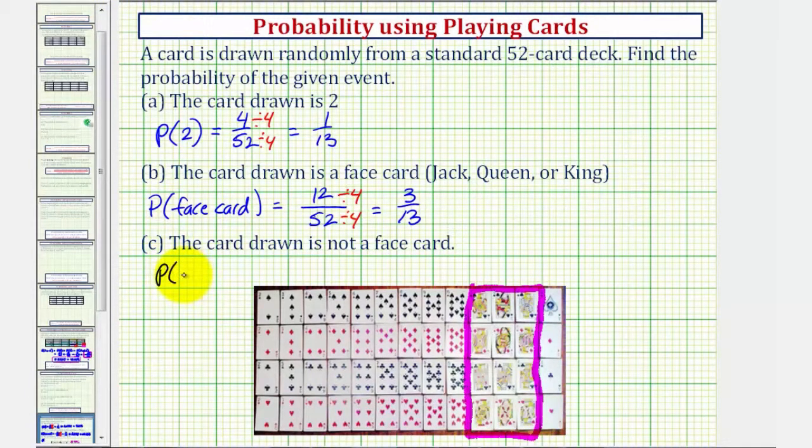The probability of not drawing a face card equals the number of non-face cards divided by the total number of cards, which is 52.